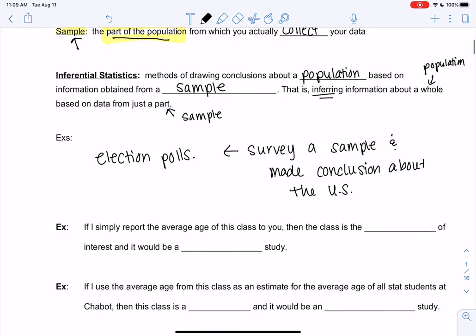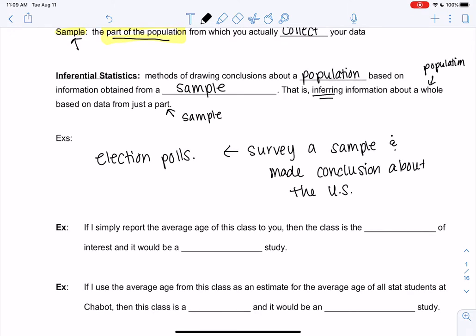So some quick examples of the difference. If I just asked all of you your age and I calculated your average, you're the sample and the population, right, because I'm describing all of you. So you're the population and the sample.